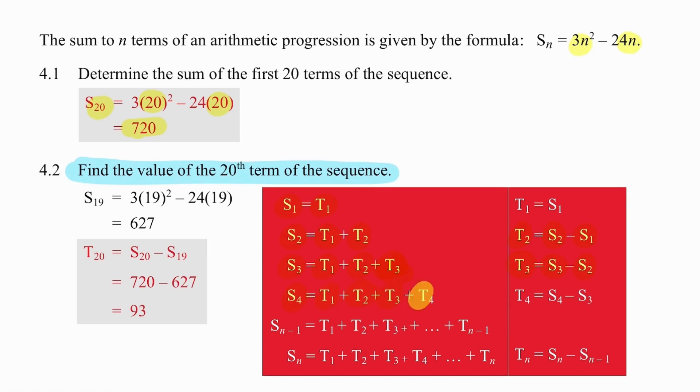And this pattern continues. The sum of four terms is the sum of T1 plus T2 plus T3 plus T4. So T4 is the sum of the first four terms minus the sum of the first three terms. From all of this, we can assume that the nth term, any term in the sequence, is the sum of n terms minus the sum of one term less.